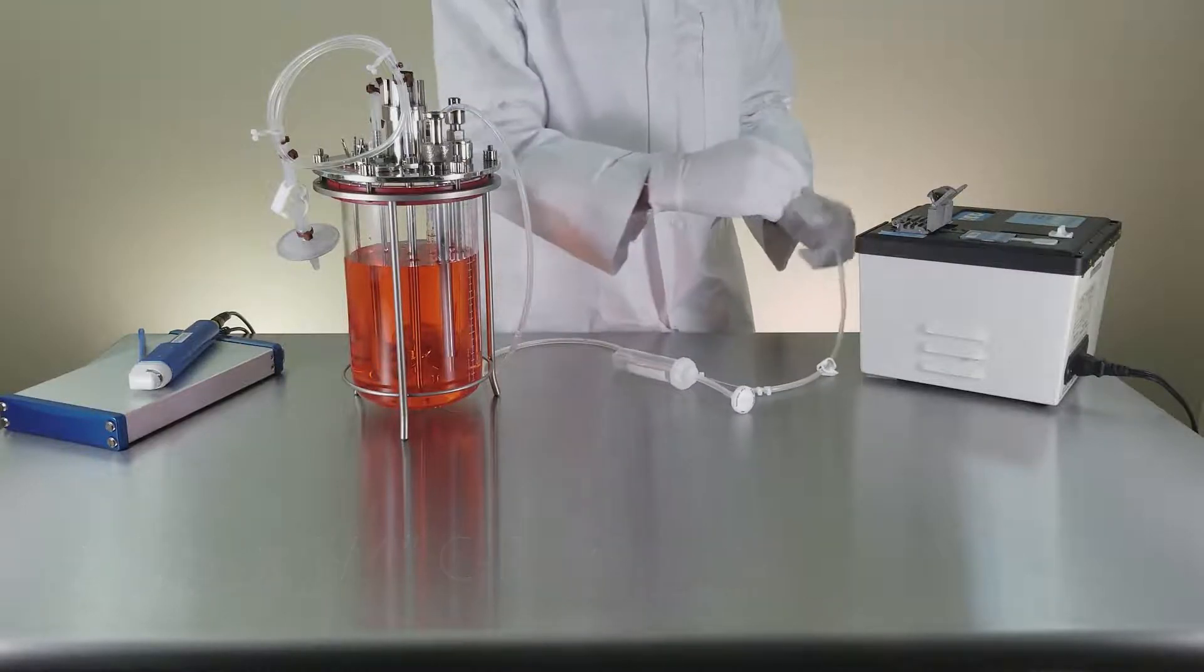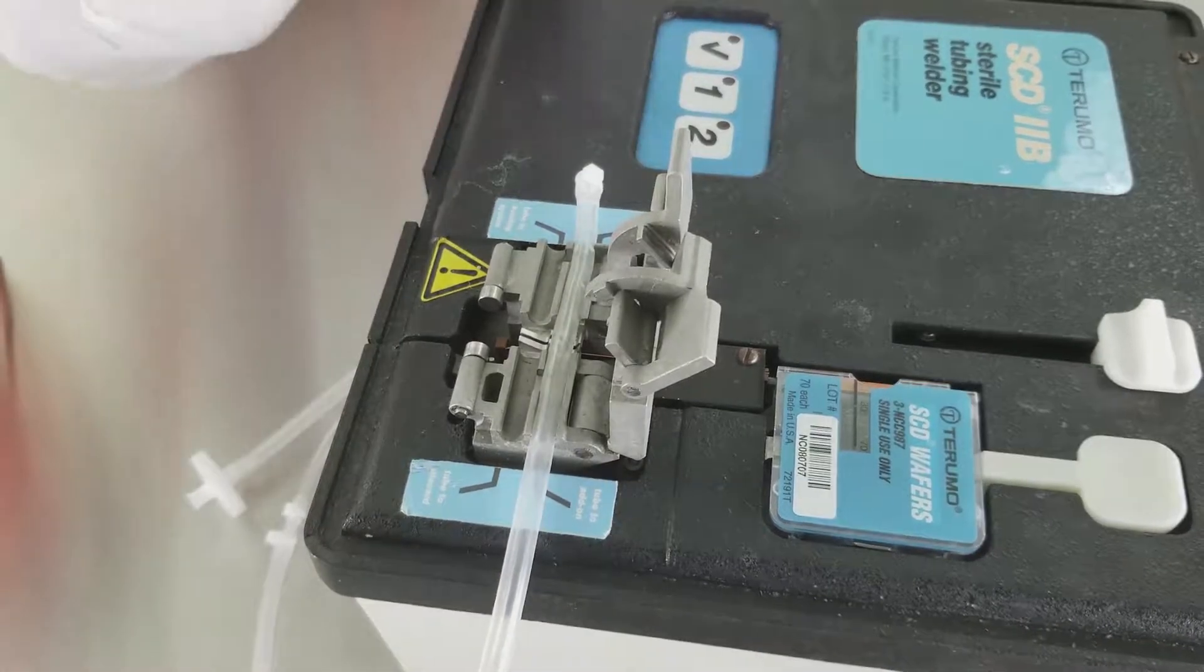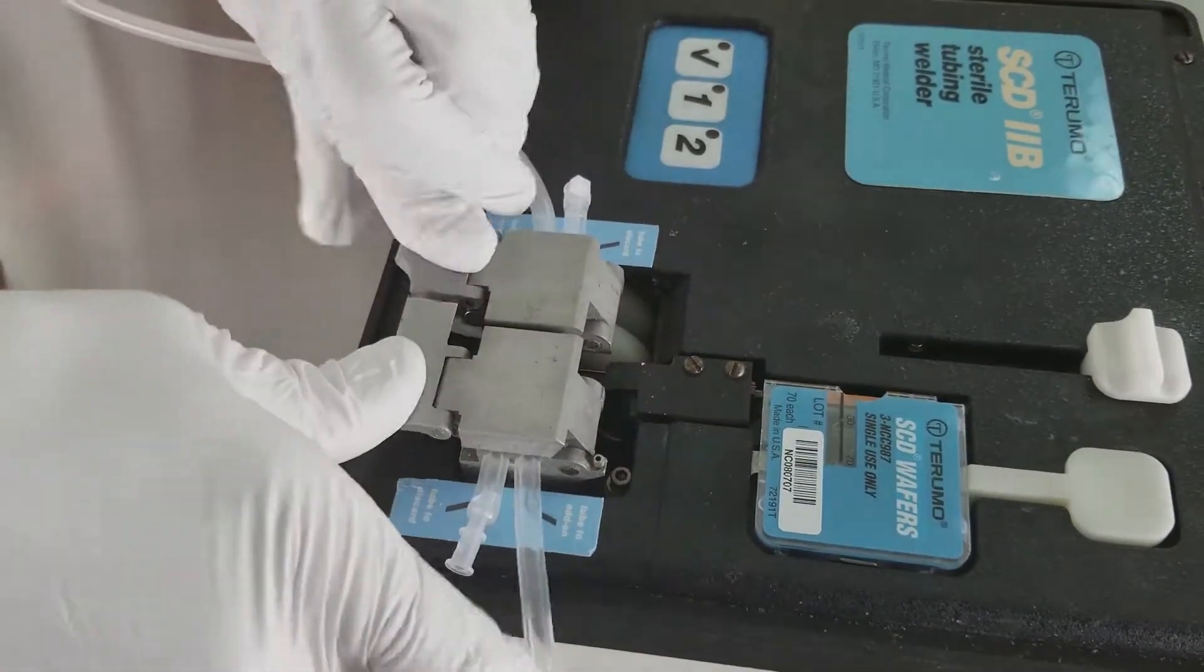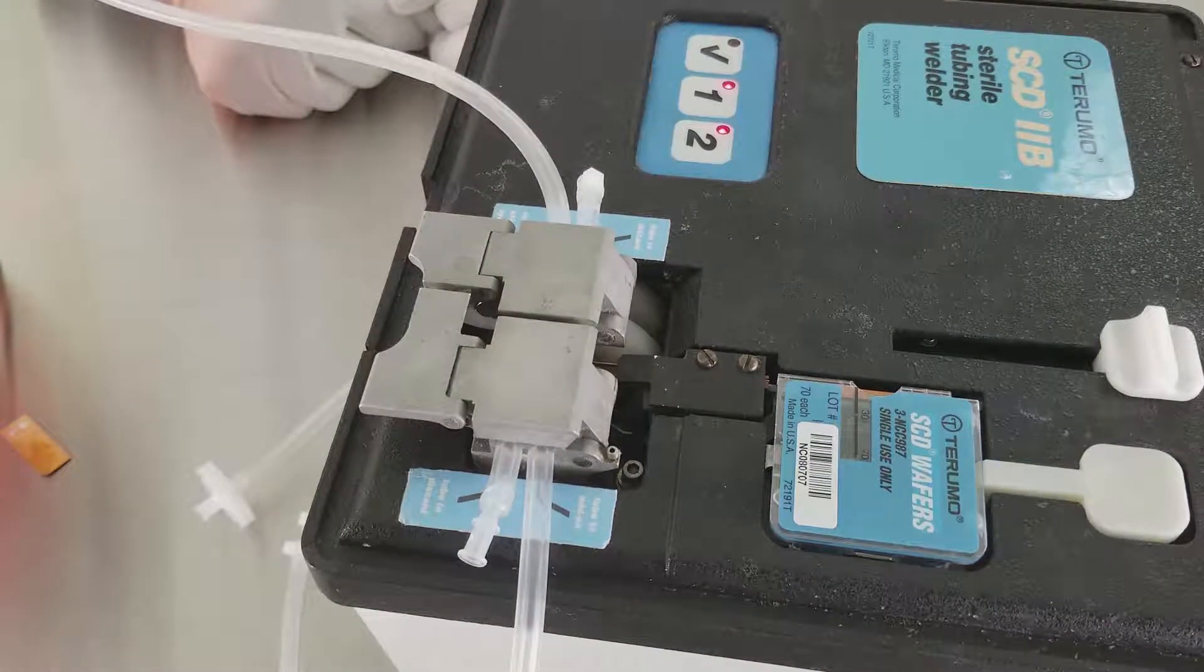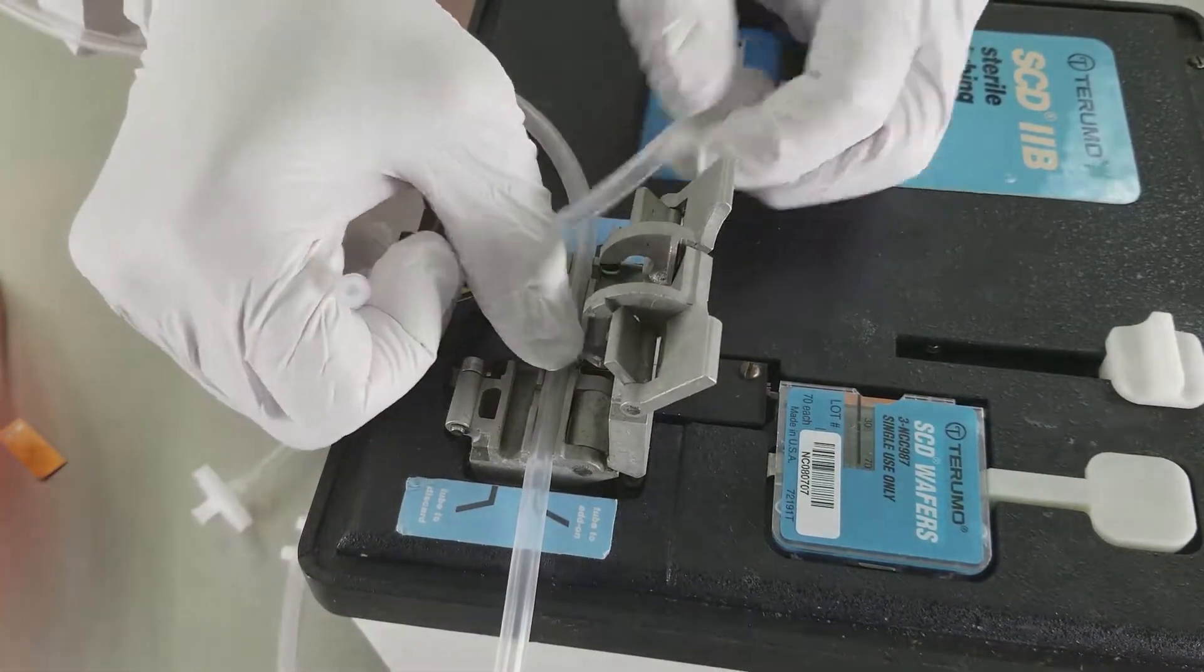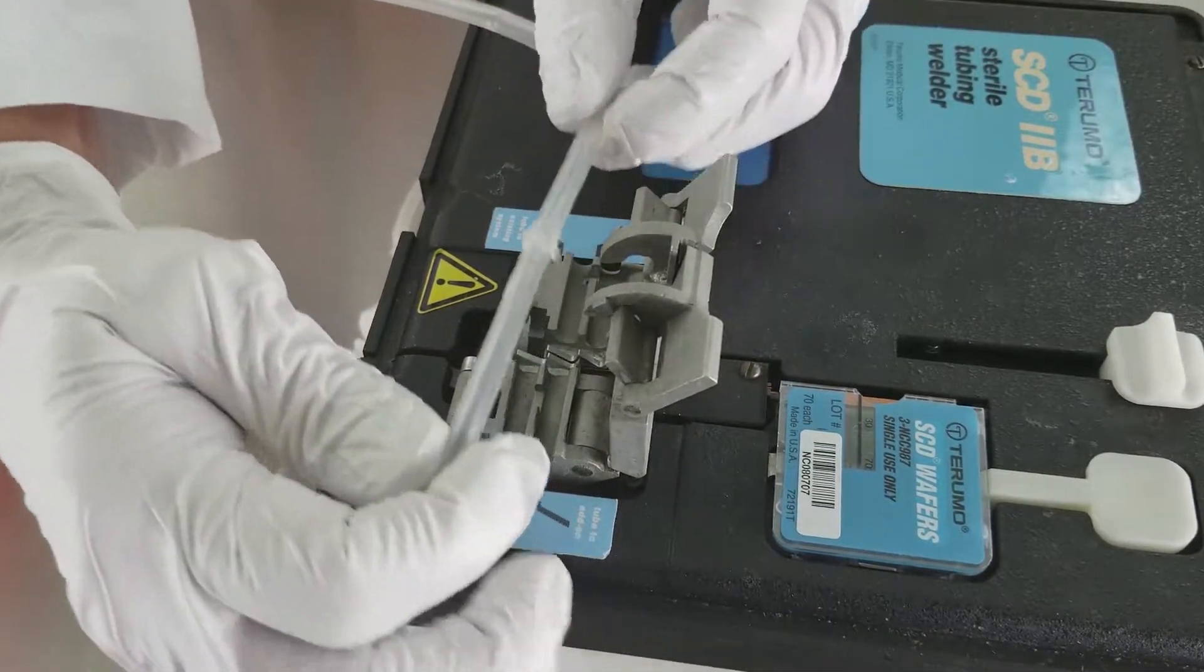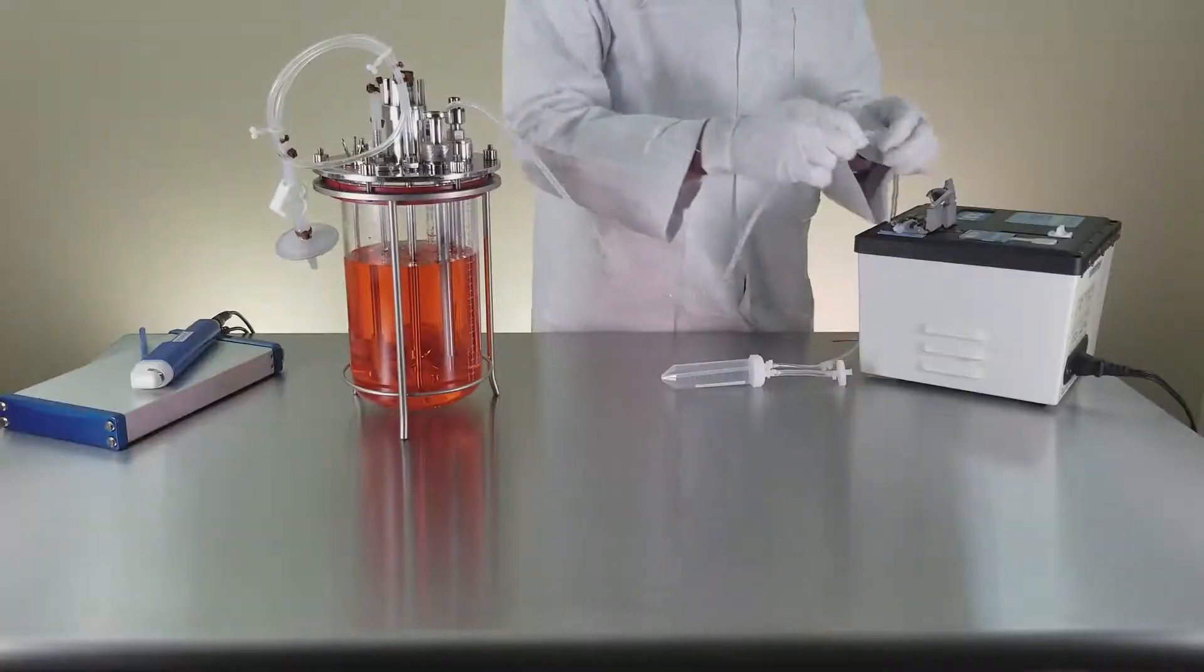Place your tubing into the welder to create a sterile weld of your Omnitop to the bioreactor. Custom connections are available too. Check the weld to make sure you made a good connection to the vessel from which you want to sample.